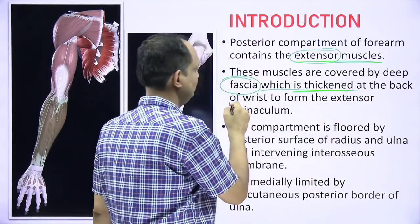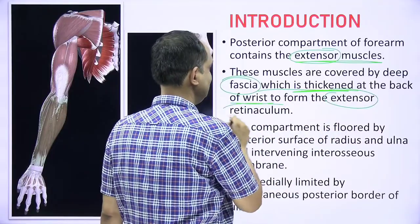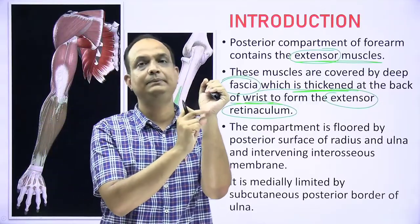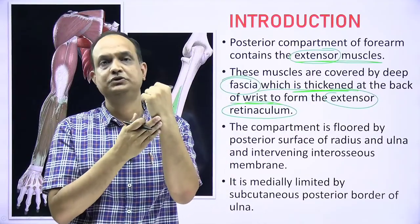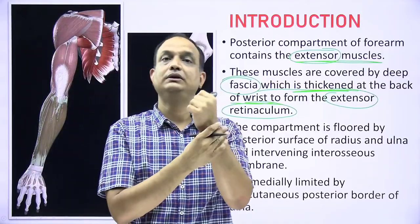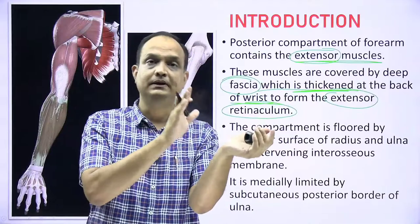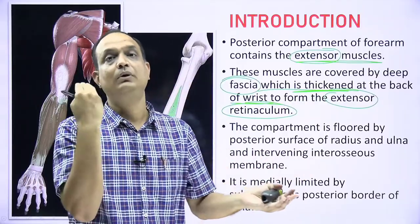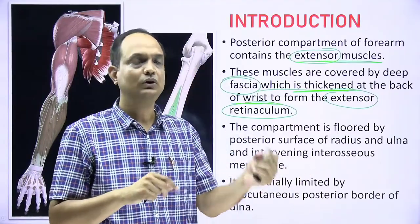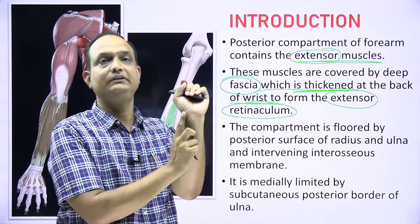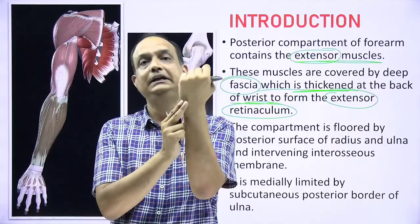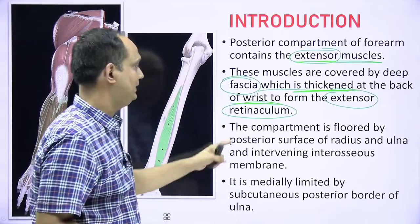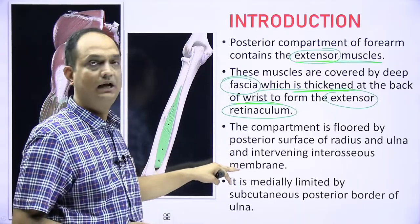These muscles are covered by deep fascia, which becomes thickened at the back of the wrist and is known as the extensor retinaculum. On the anterior aspect you have the flexor retinaculum, and on the posterior aspect the extensor retinaculum. These retinaculae keep the tendons in position, preventing buckling and stopping them from bowstringing during muscle action.